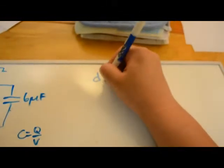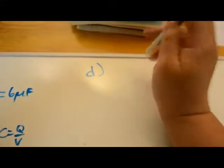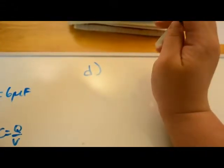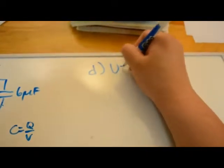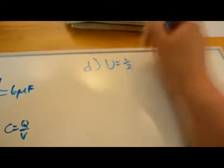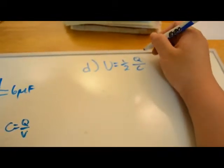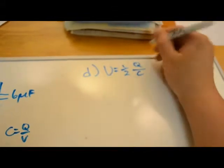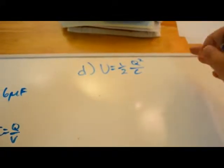For part D, they ask you to solve for the electrical energy stored in the two capacitors at equilibrium. We use the equation U equals one half Q squared over C this time, because we don't have V this time.